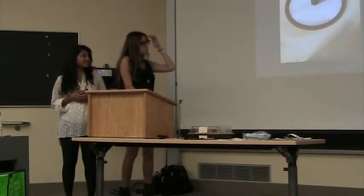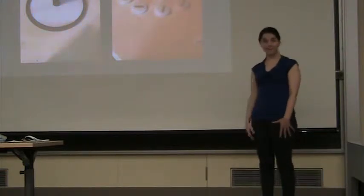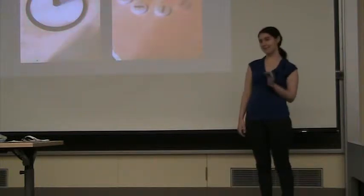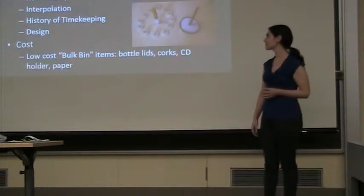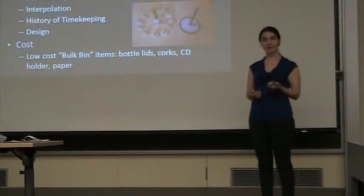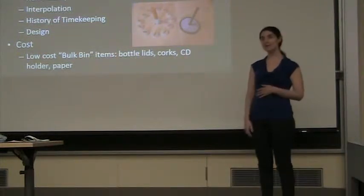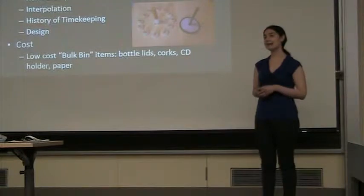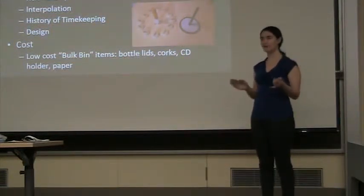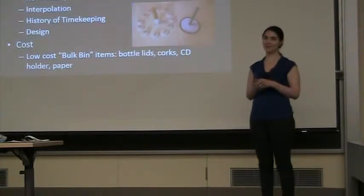The third prototype is a sundial, which promotes creativity — there are a couple different types students can make for more creative and varied projects. It explores many academic concepts: interpolation for math, the earth-sun relationship for science, history of timekeeping, and design for engineering. The teaching plan addresses these multiple subjects. It uses low-cost bulk items: bottle caps, corks, CDs, paper, a CD holder, and tape. All three projects address physical disabilities — they're usable by someone missing an upper extremity, with limited motor control, and limited physical strength, as everything is lightweight.